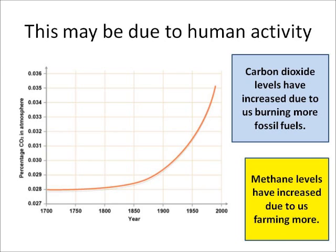This may be because of human activity, but we don't know for sure. What we do know is that carbon dioxide levels have gone up over the last 200 years because we are burning more fossil fuels. Also, methane levels have gone up because we're doing more farming and we've got more cows which are burping and farting more methane. So we know temperatures have gone up and carbon dioxide levels have gone up, so we can say between those two variables there is a correlation.